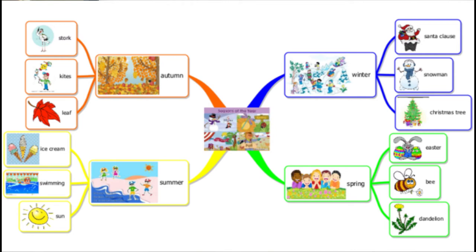You can continue to use sub-branches for each season to expand the mind map further. Next is another example.